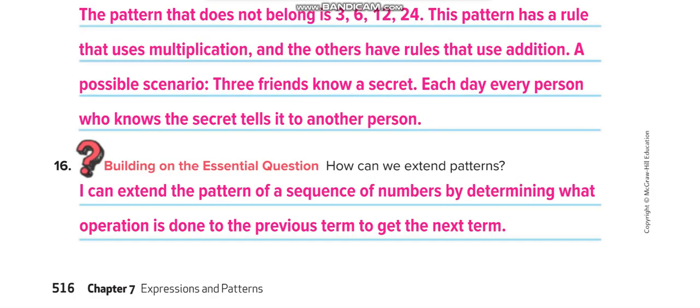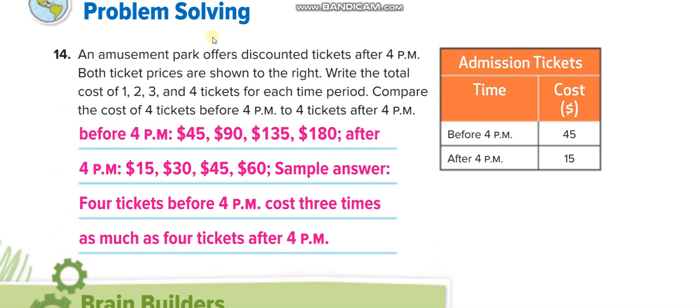Okay, let's move to the next page. Here an amusement park offers discount tickets after 4 p.m. So after 4 p.m. the ticket cost is $15, and before 4 p.m. the ticket cost is $45. So if you buy the ticket before 4 p.m., one ticket is $45. You have to find out for 2, 3, and 4: 90, 135. Each time you're adding $45. Similarly, after 4 p.m. you'll keep on adding $15 because each ticket costs $15. So one ticket $15, two tickets $30, 3 is 45, and 4 is 60.